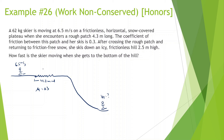First, let's figure out the force of friction. Force of friction equals normal force — which is the same as force of gravity, 620 newtons — times the coefficient of friction 0.3. That gives 620 times 0.3 equals 186 newtons.